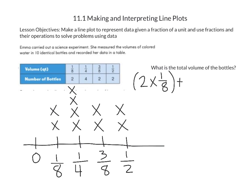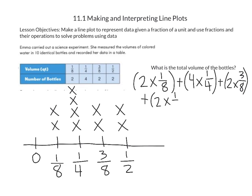Then we're going to add the volume of 1/4 quart. Since there are four bottles, we multiply 4 × 1/4. For 3/8 quart, there were two bottles, so we multiply 2 × 3/8. And for 1/2 quart, there were two bottles, so we multiply 2 × 1/2.